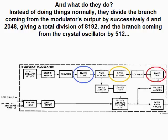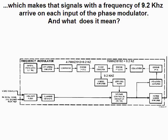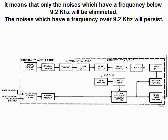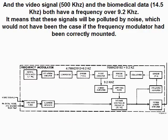Instead of doing things normally, they divide the branch from the modulator's output successively by 4 and 2048, giving a total division of 8192, and the branch from the crystal oscillator by 512. This makes signals of 9.2 kHz arrive on each input of the phase modulator. It means that only noises with a frequency below 9.2 kHz will be eliminated — noises with a frequency over 9.2 kHz will persist. The video signal at 500 kHz and the biomedical data at 14.5 kHz both have frequencies over 9.2 kHz, meaning these signals will be polluted by noise, which would not have been the case if the frequency modulator had been correctly mounted.